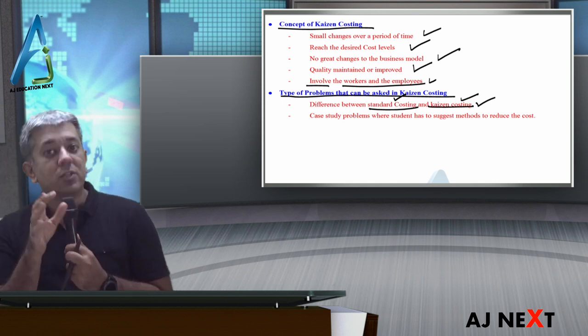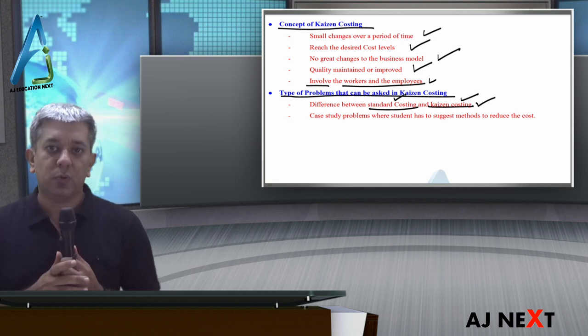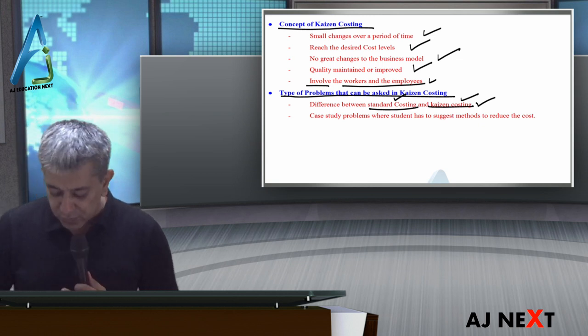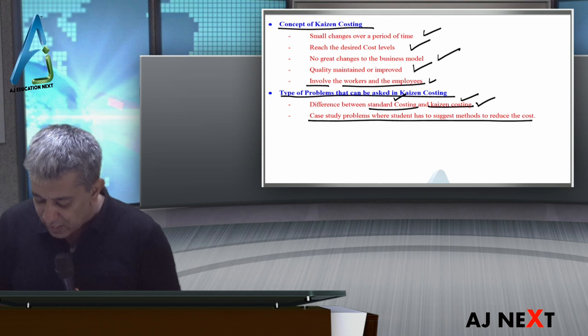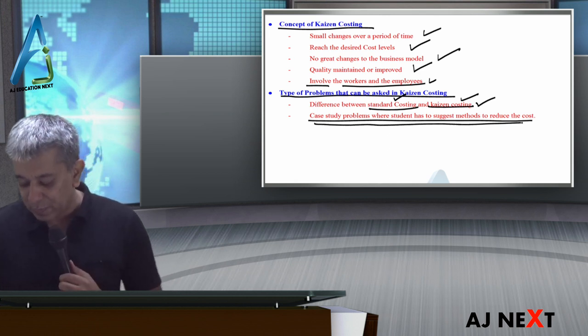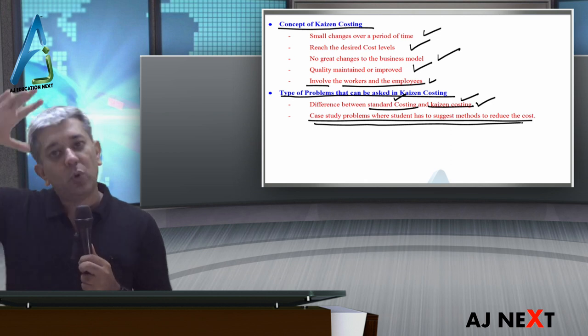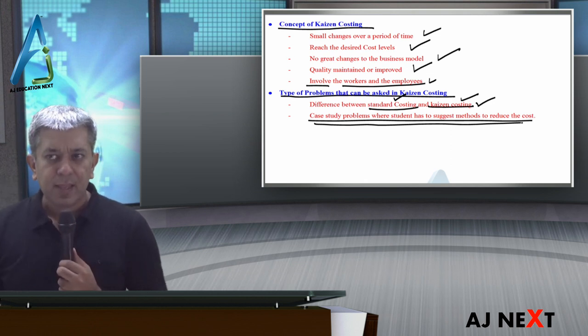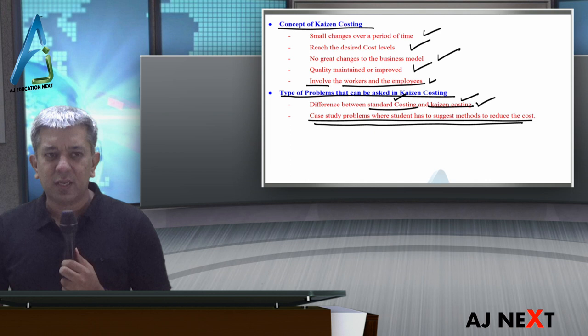So there is a difference. They might ask you in theory what is Kaizen costing and what is standard costing. And mostly, what they will ask you is case study problems, whereby the student has to suggest methods to reduce the cost. They will give you a case scenario and say, company is thinking of reducing cost.